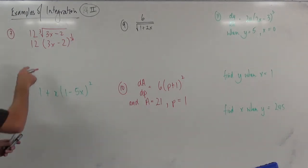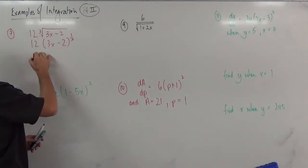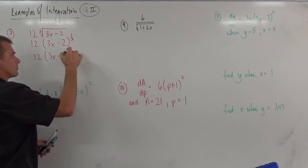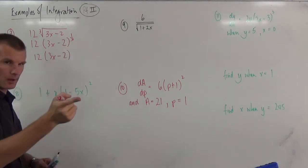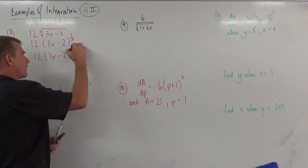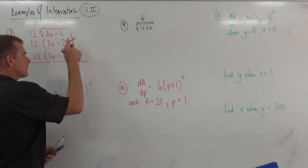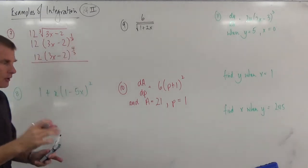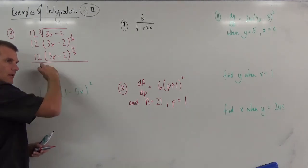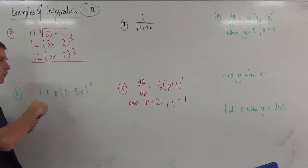Now let's do our little trick. So now we're going to raise the power by 1. So we're going to end up with 12 3x minus 2. Raise the power by 1 would get 1 and 1 third, or 4 over 3, divided by the new power.